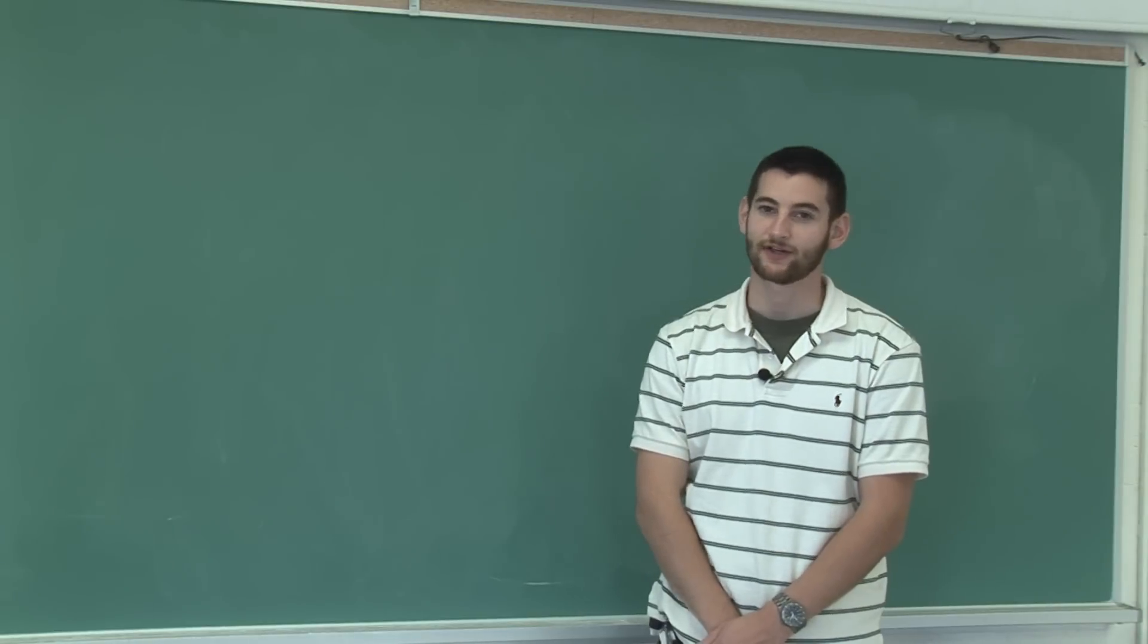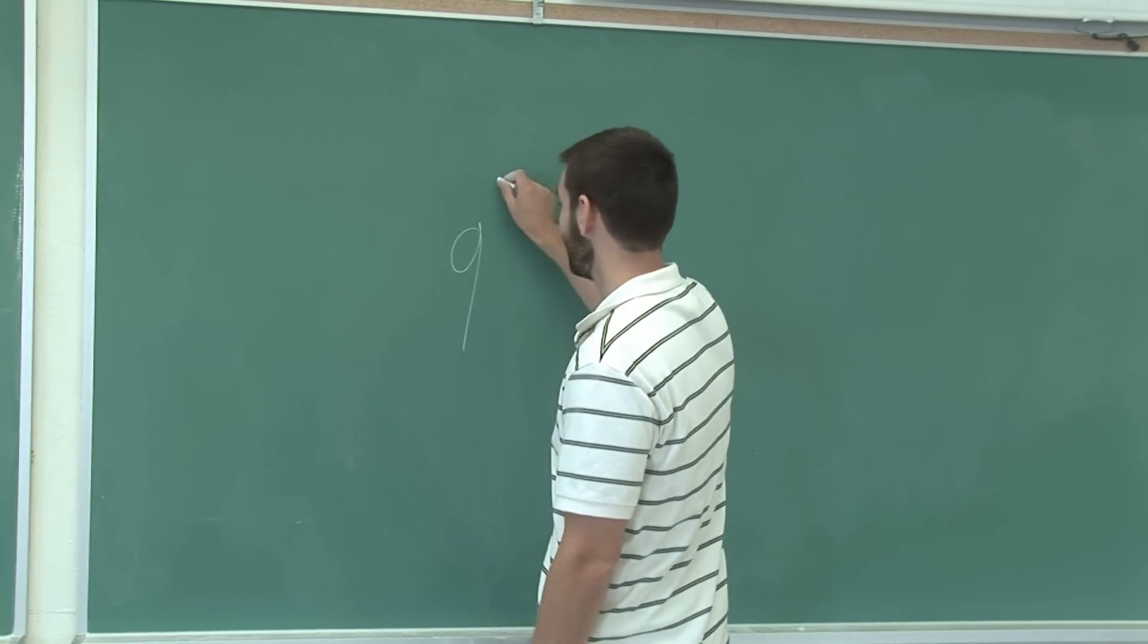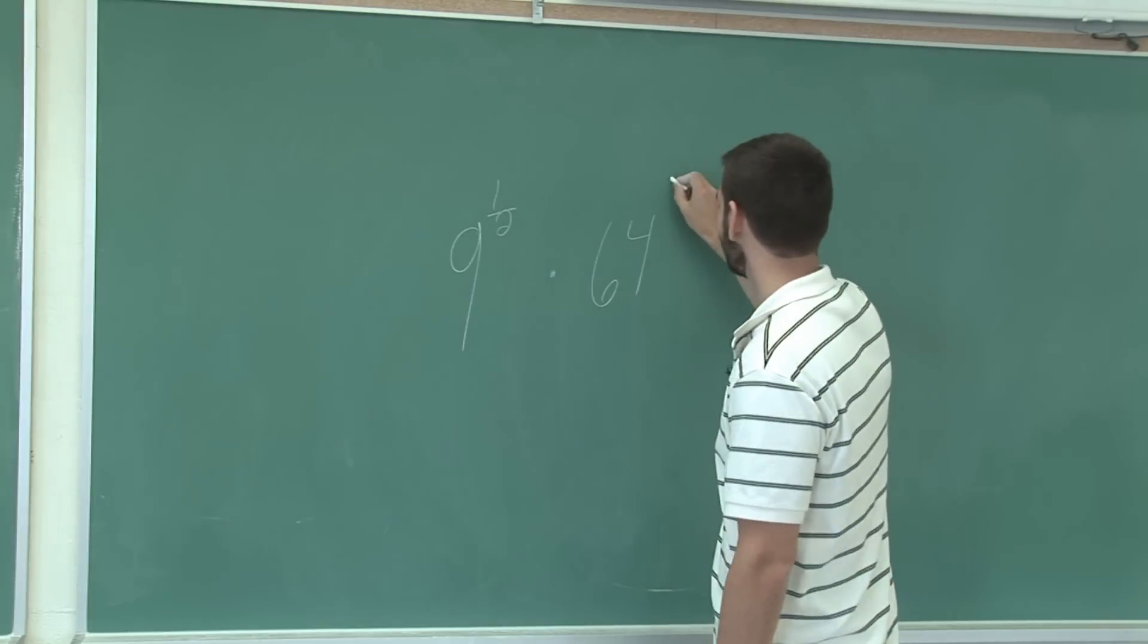Now I'm going to show you how to multiply fractional exponents. Let's take the number 9 raised to the 1 half multiplied by 64 raised to the 1 third.